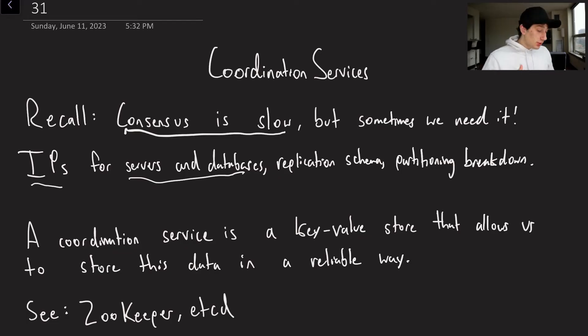So the typical pattern that you would use is you would put this configuration in something like a coordination service, which again is just a small key value store. And then for your actual application data, you know, user post history, comments, anything like that, you would use a different type of database that itself may be relying on the coordination service to be correct.